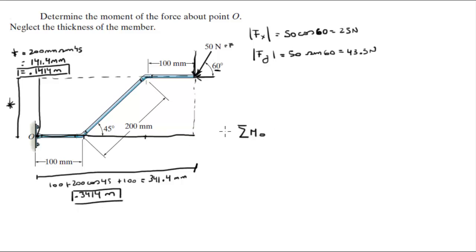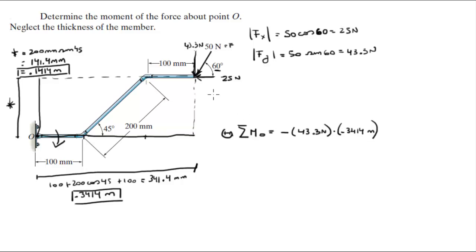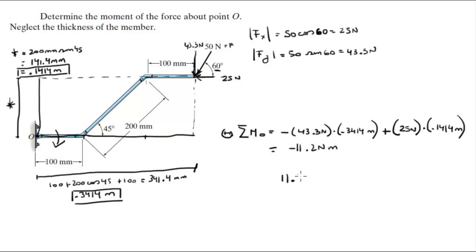The sum of the moments about O, assuming counterclockwise is positive: the y-component of 43.3 newtons pushes the lever arm clockwise, so it is negative — that gives −43.3 N × 0.3414 m. The x-component of 25 newtons pushes the lever arm counterclockwise, so it is positive — giving +25 N × 0.1414 m. The total comes out to −11.2 newton-meters, meaning the moment is 11.2 N·m clockwise.